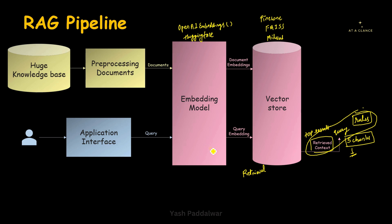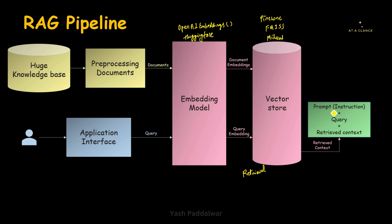We are attaching the rules and instructions to be followed by the LLM so that it will be restricted to what exactly has to be done with the retrieved context. This prompt will define the instructions, the query raised by the user, as well as the retrieved relevant context that we got from the vector store for that particular query embedding. This entire thing acts as the input to the LLM. Inside the instruction, we can say to the LLM: 'You will be given a query and retrieved context. Find the answer to the query from the retrieved context and generate the response in a concise and precise way.' This simple set of instructions restricts the LLM from generating irrelevant responses and makes it create only relevant responses.